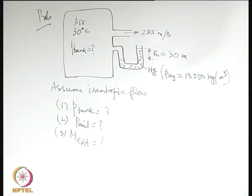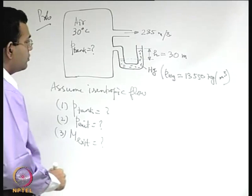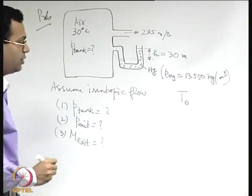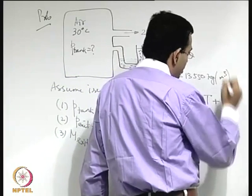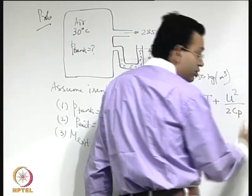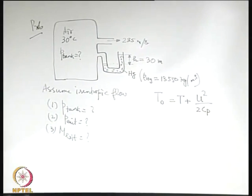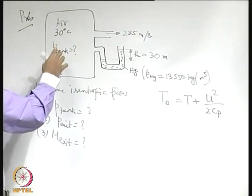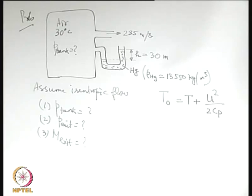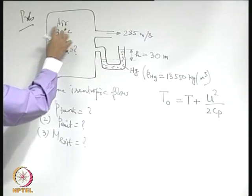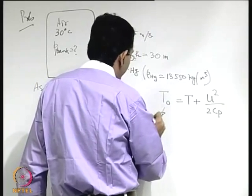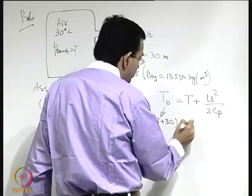Applying the energy equation in terms of stagnation temperature: T0 = T + u²/(2Cp). When you have a large tank, the fluid inside is approximately at a stagnation condition. So the temperature of 30 degrees centigrade is the stagnation temperature. Therefore T0 = 273 + 30 Kelvin.